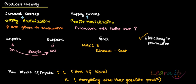In the case of demand curves and the utility maximization approach, prices are given to consumers — they are exogenously given. Consumers cannot change prices themselves. But in the case of producer theory, producers set their own prices.